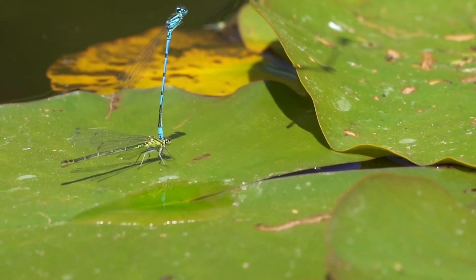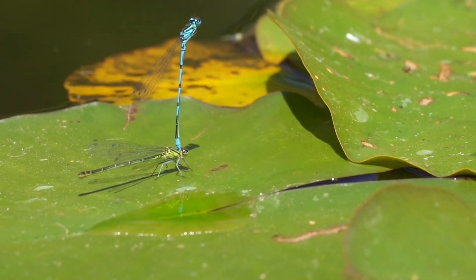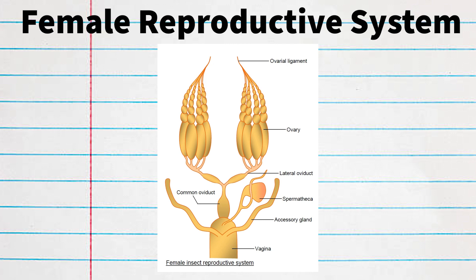The female reproductive system starts in the ovaries, with egg production taking place on regions called the ovarioles. Once an egg is produced, it will travel down a canal called the lateral oviduct into a larger common oviduct. During fertilization, sperm is taken in via the vagina and moved into the spermatheca for storage until it is released along with fluid from the accessory glands, creating a fertilized egg with a covering. Once the egg is ready to be laid, it moves into the ovipositor and is released from the insect's body.